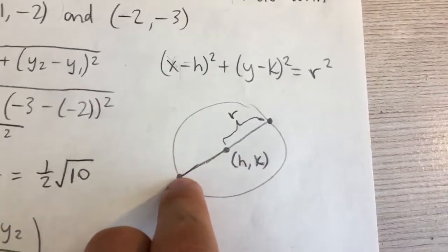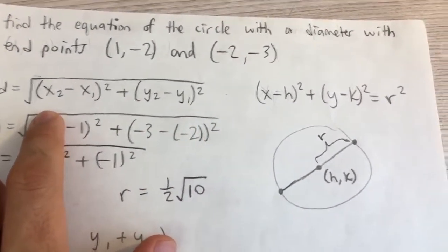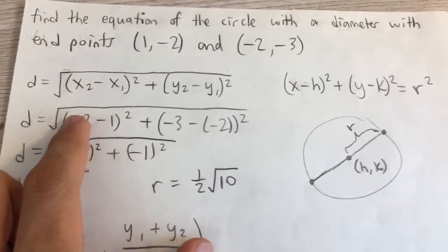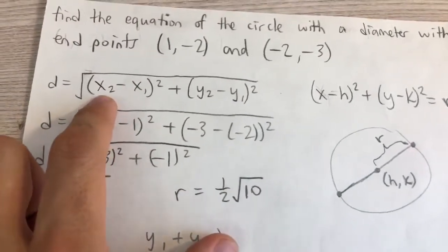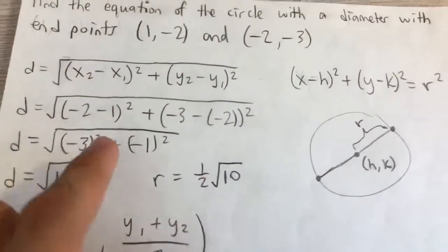If we use the distance formula to calculate the distance between the two points, like this formula here, and then divided by 2, we'll get our radius. So here we take the difference in the x values, that's -2 minus 1, or we could do it the other way around, it doesn't matter.